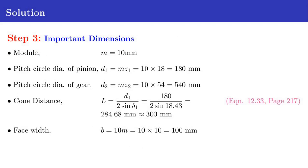Now we find out some important dimensions of gear. Module M is 10mm. Pitch circle diameter for gear D2 equals M times Z2 equals 10 times 54 equals 540 millimeter. The cone distance L equals D1 divided by 2 sin delta 1, equation 12.33 in page 217. L is obtained as 284.68 millimeter.